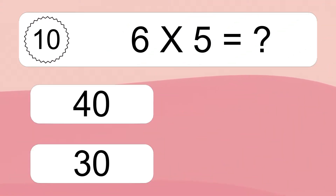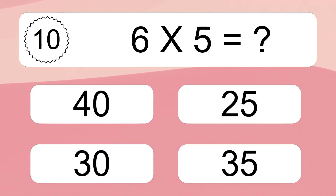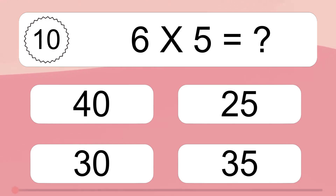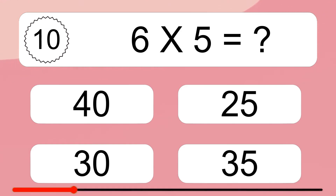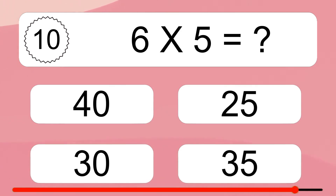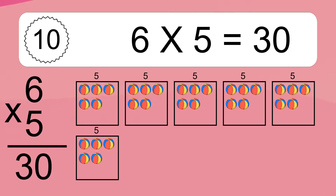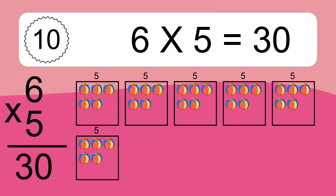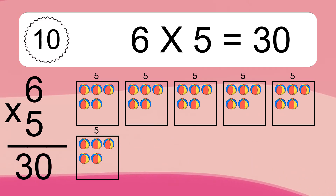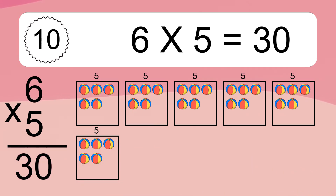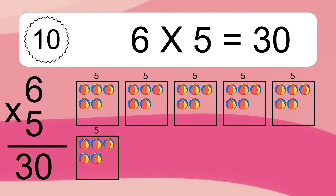6 times 5 equals what? 6 times 5 equals 30. We have 6 boxes and each box has 5 colorful balls inside. If you count all the balls in all the boxes together, you will have 6 times 5 balls. This equals 30 balls.